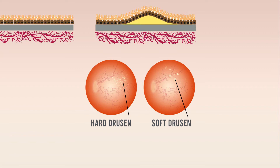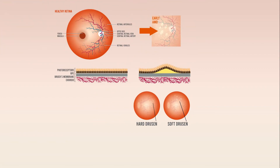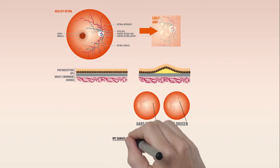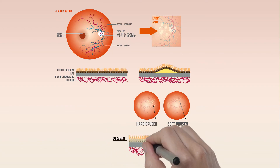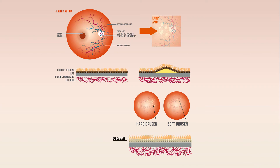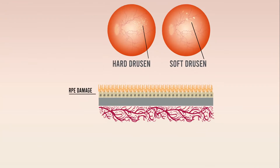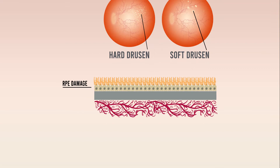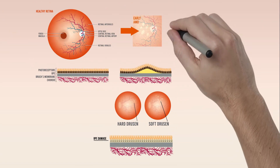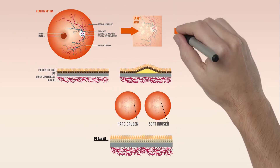Another hallmark of AMD is RPE damage. Problems with choroidal blood flow, reactive oxygen species, and increased complement activation contribute to RPE damage. The result is an RPE that no longer clears photoreceptor waste products effectively, causing photoreceptor death and subsequent vision loss.